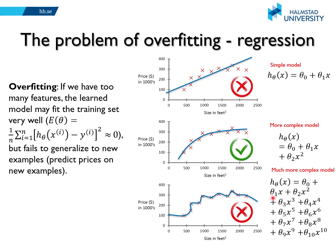When your model is too complex — for example when it depends on a lot of parameters, like 11 parameters from theta 0 to theta 10 — the more parameters you have, the more complex your model. When the model is too complex or your training data has too many features, the learned model may fit the training data very well, achieving basically zero mean squared error. But when you apply it to new data, it will fail to generalize. So if you compute the generalization error, you will see that it is high in this case.